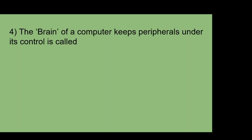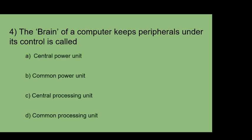The answer is arithmetic logic unit. The brain of the computer that keeps peripherals under its control is called: A: Central power unit. B: Common power unit. C: Central processing unit. D: Common processing unit. The answer is central processing unit.